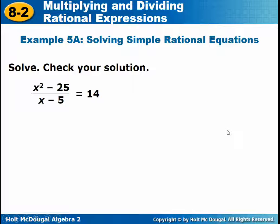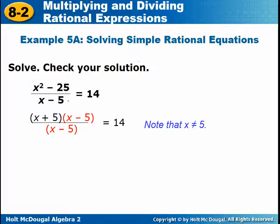Solving rational equations — that's what we're going to go on to next. Division is really the same as multiplication. Let's look at how to solve simple rational equations. First, make note of what X cannot equal — that's very important and is part of your answer. We cannot have 0 in the denominator, so set the denominator equal to 0: X minus 5 equals 0, so X cannot equal 5.